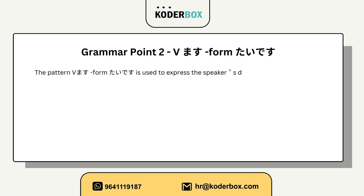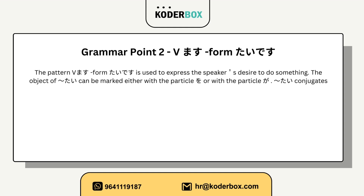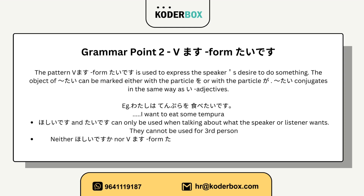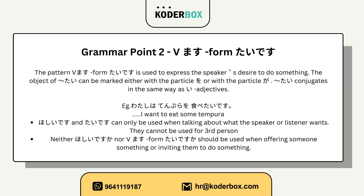Grammar point two: verb masu-form + tai desu. This pattern is used to express the speaker's desire to do something. The object of tai desu can be marked either with the particle o or with the particle ga. Tai desu conjugates in the same way as i-adjectives. Example: Watashi wa tenpura o tabetai desu. I want to eat some tempura. Note: hoshii desu and tai desu can only be used when talking about what the speaker or listener wants — they cannot be used for third person. Neither hoshii desu ka nor verb masu-form tai desu ka should be used when offering someone something or inviting them to do something.